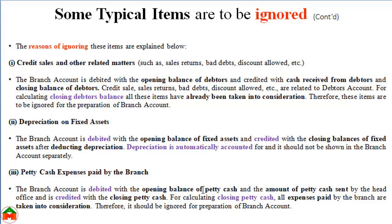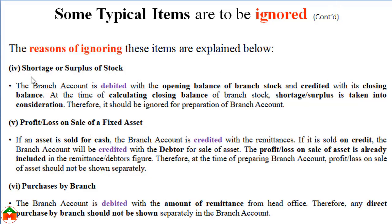Similarly, petty cash expenses paid by the branch are not considered while preparing the journal or branch account because we show the branch account as debit with the opening balances of petty cash and credit with the closing balance of petty cash. All expenses paid by the branch are adjusted with the closing balance. Since we are going to record the closing petty cash, the expenses paid by the branch are not required to be shown separately. Likewise, if there is a shortage or surplus of stock, there is no need to consider it in the journal or branch account, because we debit the branch account with the opening balance of stock.